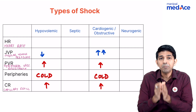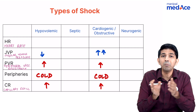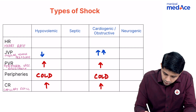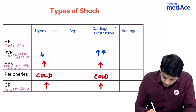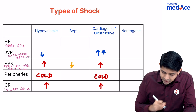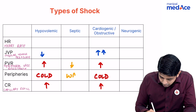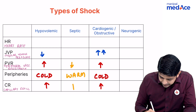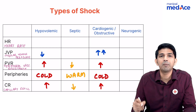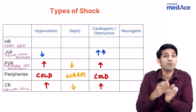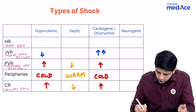Septic shock is the complete opposite of hypovolemic shock. Peripheral vascular resistance is low, patients will have warm peripheries, and capillary refill time is short. Copy the same features onto neurogenic shock.